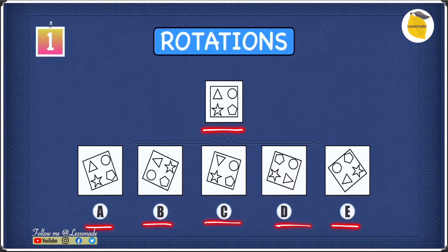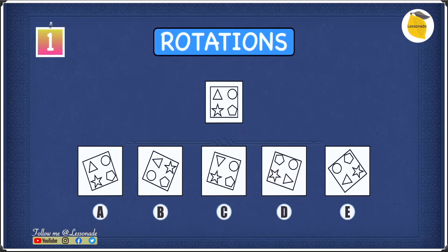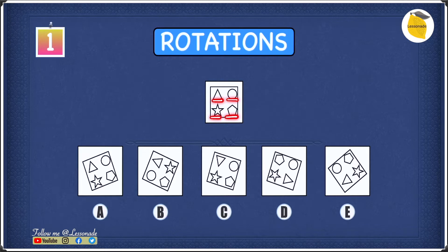Let's start by finding the obvious errors first. In this question figure we have five shapes: a larger square on the outside and four smaller shapes on the inside — a triangle, a circle, a star, and a pentagon.